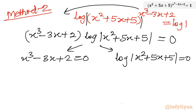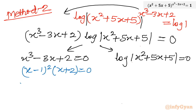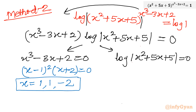Setting each factor to zero gives two equations. First equation: x³ - 3x + 2 = 0. Second equation: log|x² + 5x + 5| = 0. For the cubic equation, factoring gives (x - 1)²(x + 2) = 0, yielding x = 1 (repeated) and x = -2.